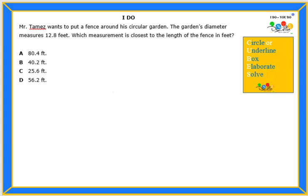Hello students! Let's read this problem together. Mr. Thames wants to put a fence around his circular garden. The garden's diameter measures 12.8 feet. Which measure is closest to the length of the fence in feet?